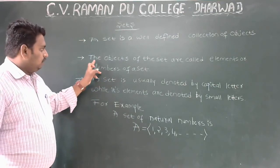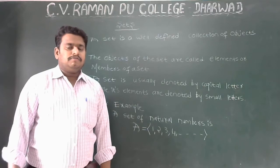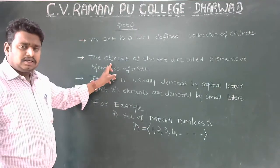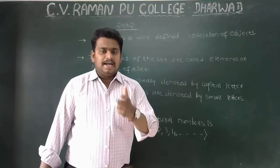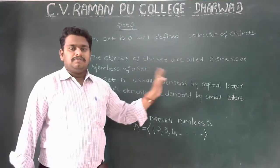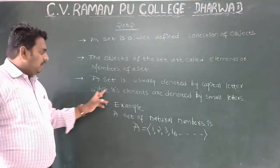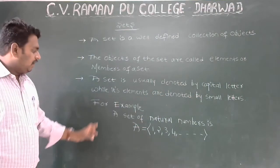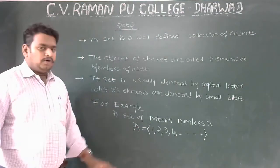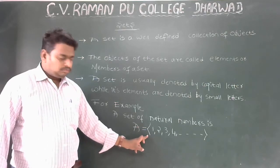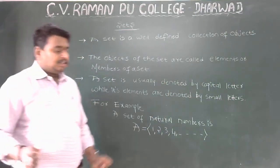The objects of the sets are called elements or members of the set. A set is usually denoted by a capital letter, while its elements are denoted by small letters. For example, a set of natural numbers equals to {1, 2, 3, 4, ...} and so on.